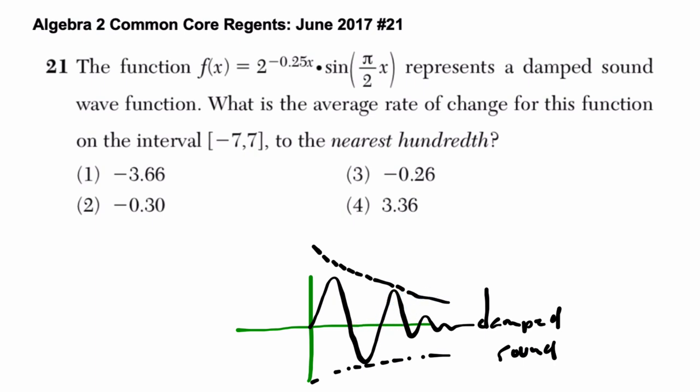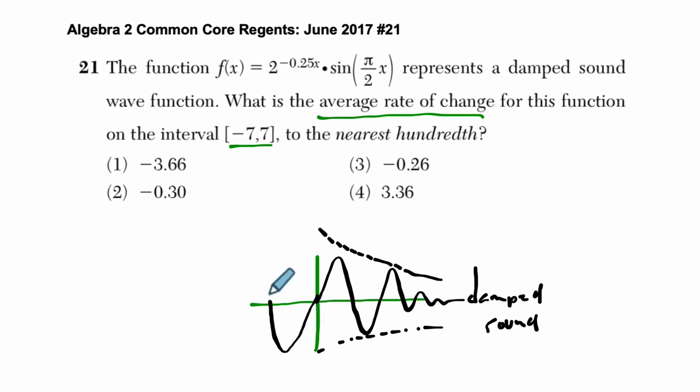You don't need to know that, though. We're looking at the average rate of change from an interval of negative 7 to positive 7. So they're actually going back here, right, to negative 7.